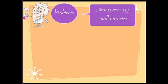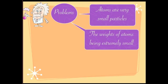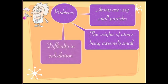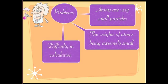Atoms are very small particles — so small that it's very difficult for us to see them with our naked eyes. We need electron microscopes to see atoms, and measuring their mass becomes even more difficult because the mass of atoms is extremely small. When you express these extremely small masses, it also becomes difficult for calculation.